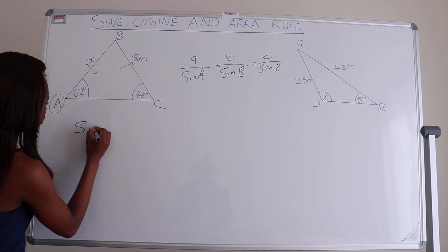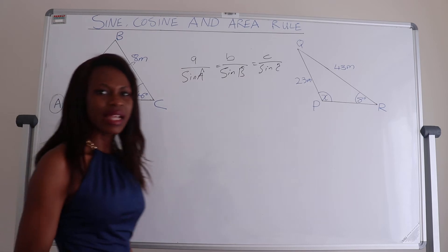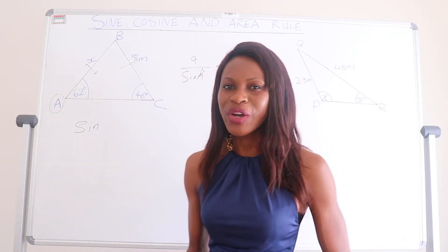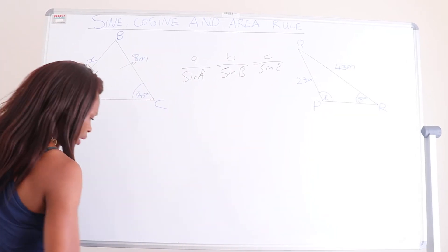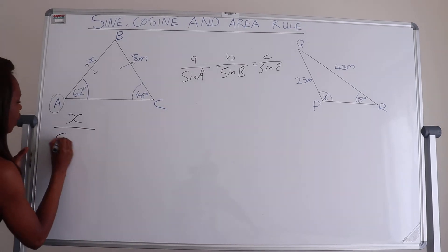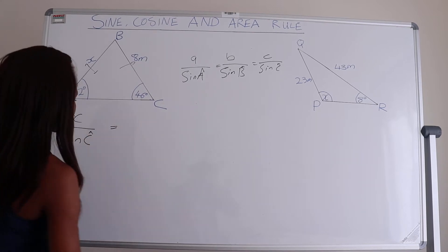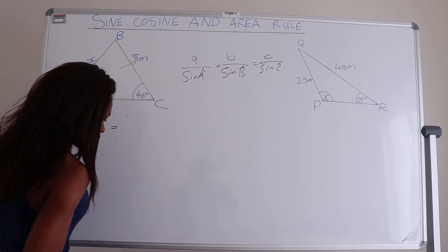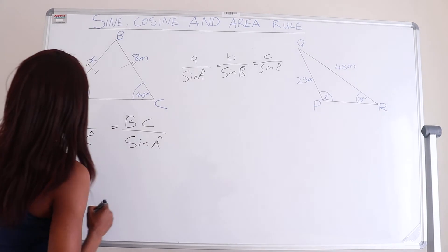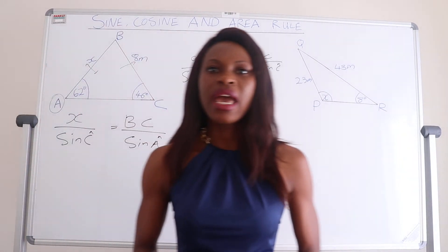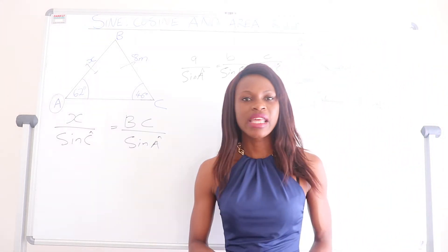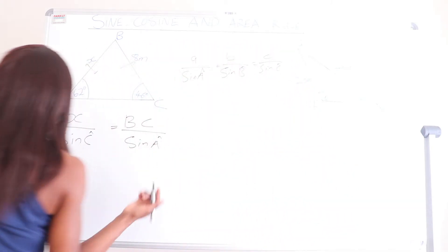We need to first write the equation. I always prefer that if you are finding a side, you have the side in the numerator. So x divided by sine of C equals the side BC divided by sine of angle A. If you don't want to write the values in the first step, you can make x the subject of the formula and then punch in the values.